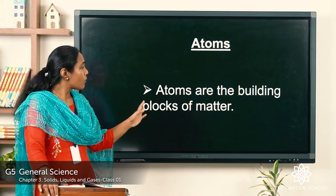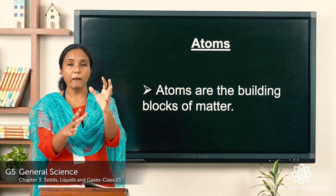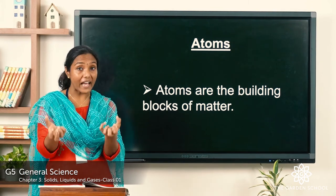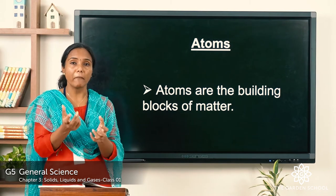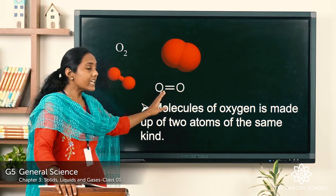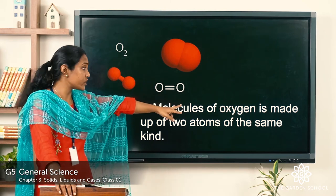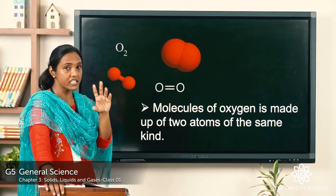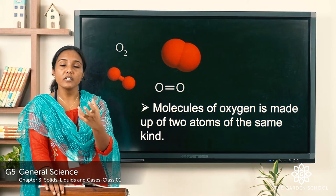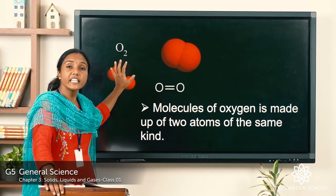Atoms are the building blocks of matter. Matter is made up of molecules, and molecules are made up of atoms. So atoms build up in the form of molecules. You can see atoms on the screen — this molecule of oxygen is made up of 2 atoms of the same kind. Atoms are represented as balls and in the same color if they are the same kind of atom.